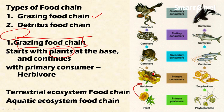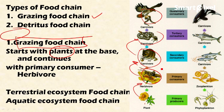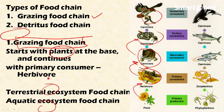It starts with plants and continues with the primary consumer — here it is the grasshopper — then to the secondary consumer, and then to the tertiary and quaternary consumers. The grazing food chain is further divided into the terrestrial food chain and the aquatic food chain. The terrestrial food chain is seen in forest ecosystems.